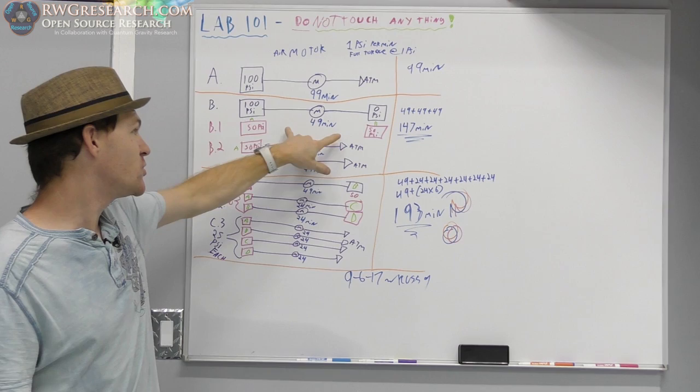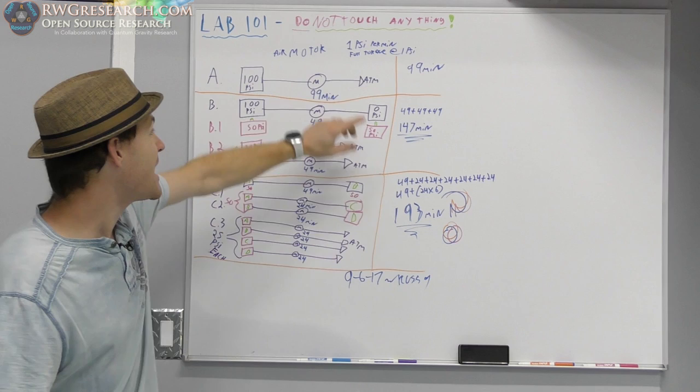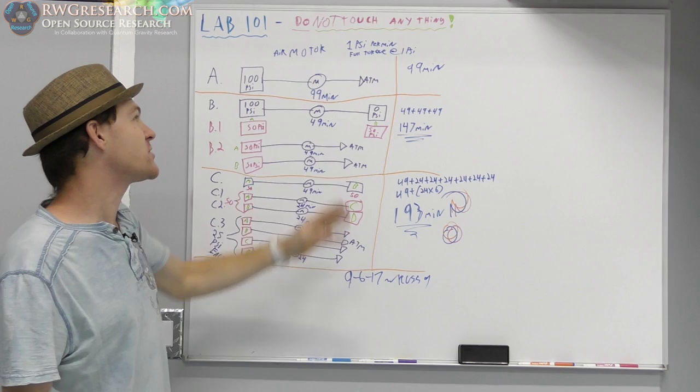I'm not dealing with a lot of variables. I'm not dealing with flow. But the point is that the thought experiment said that one PSI per minute, you could get full torque out of the motor that you were running.